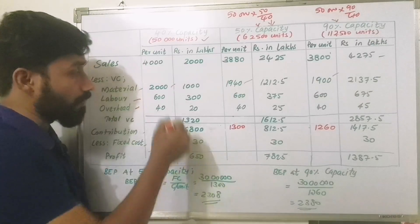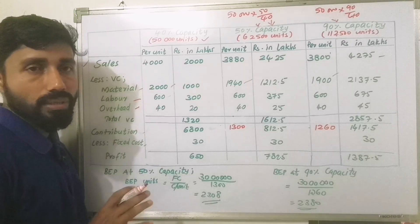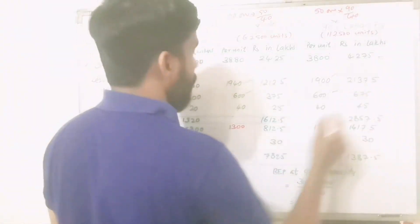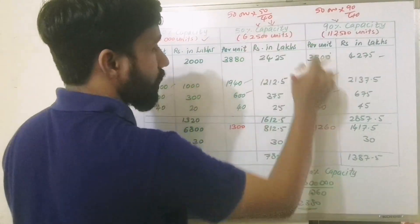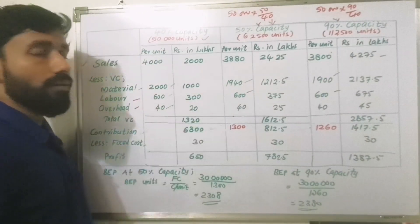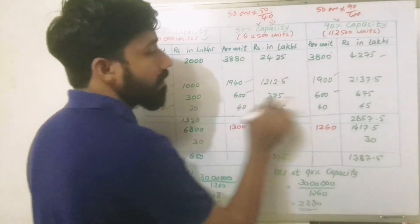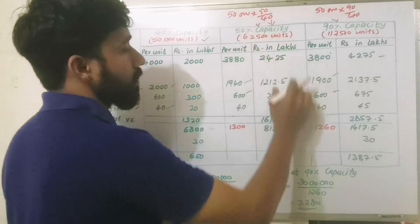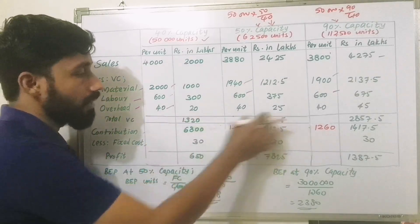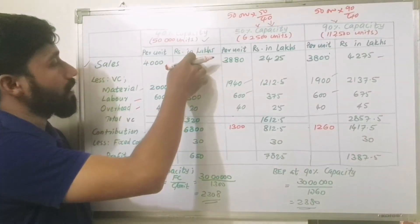Variable overheads per unit: labour is Rs. 600 for all capacities — 600 × 50,000, 600 × 62,500, and 600 × 1,12,500. Overhead cost per unit is applied at each capacity level. Then our contribution is calculated.